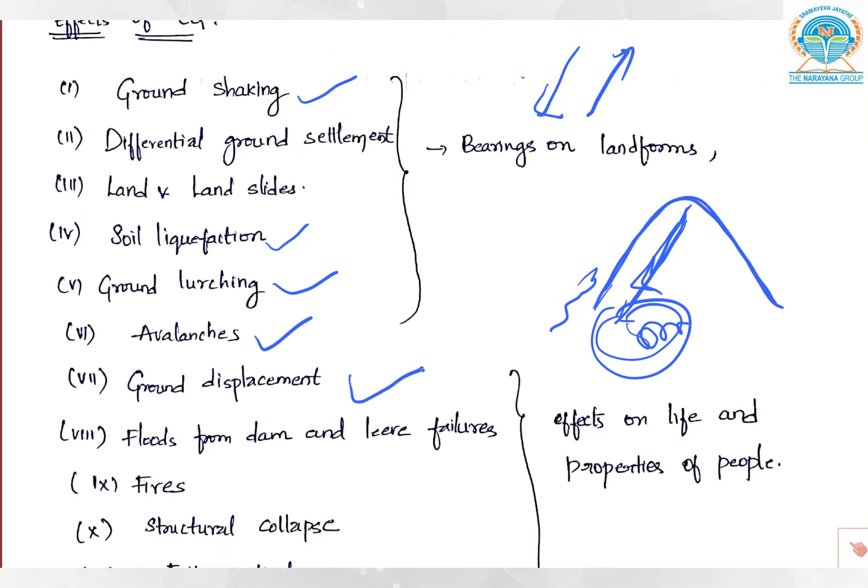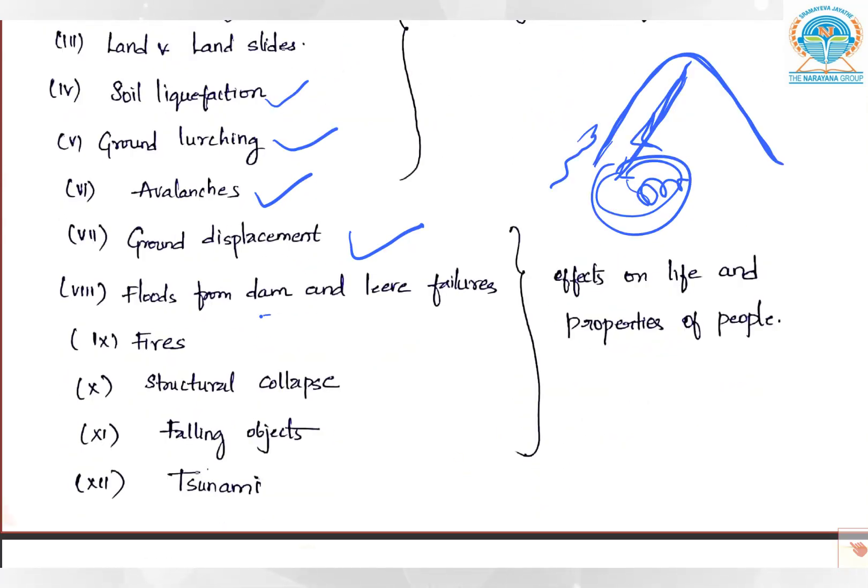There is ground displacement as discussed. There can be floods from dam and levee failures. There can be fires, structural collapse of buildings and property, falling of objects both huge and small, and it can also result in formation of a tsunami.